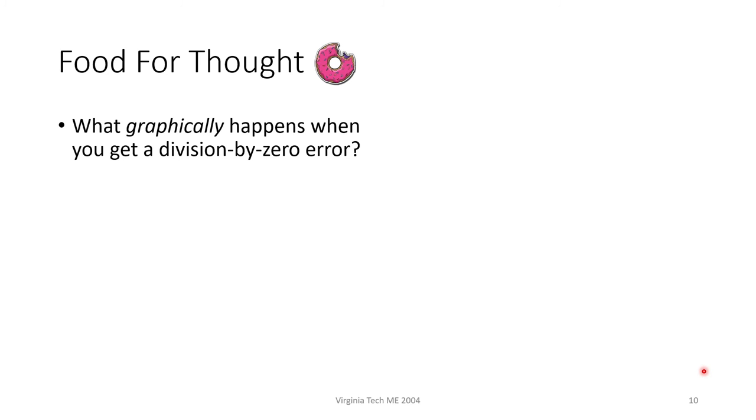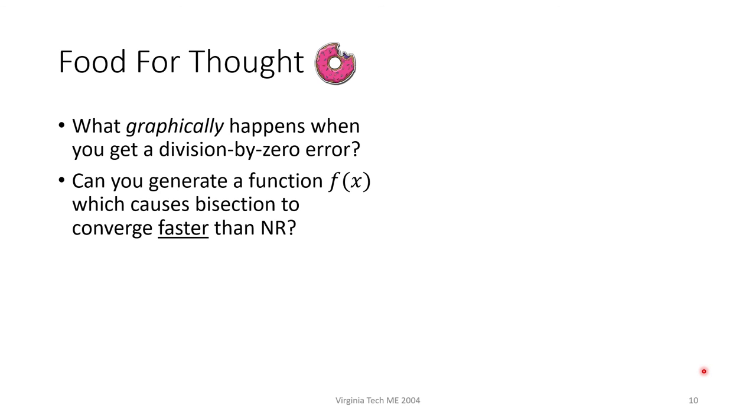Next, we said that Newton-Raphson is generally faster than bisection, but there are plenty of exceptions. Can you think of a function which causes bisection to converge faster than Newton-Raphson?